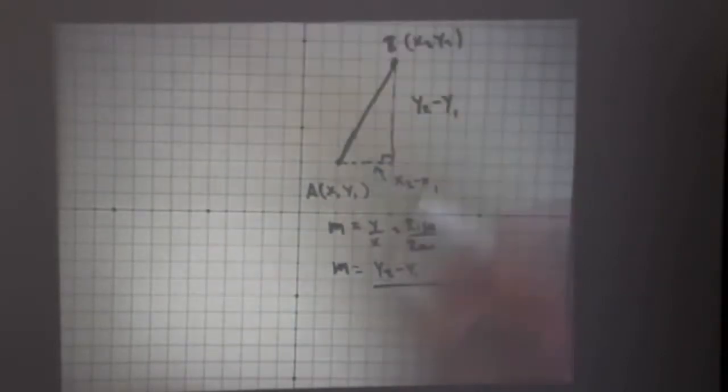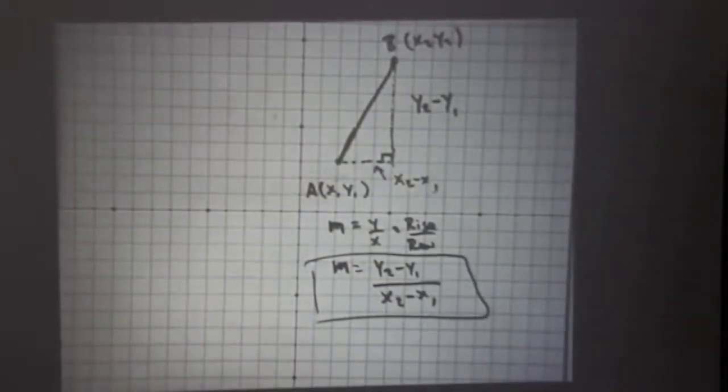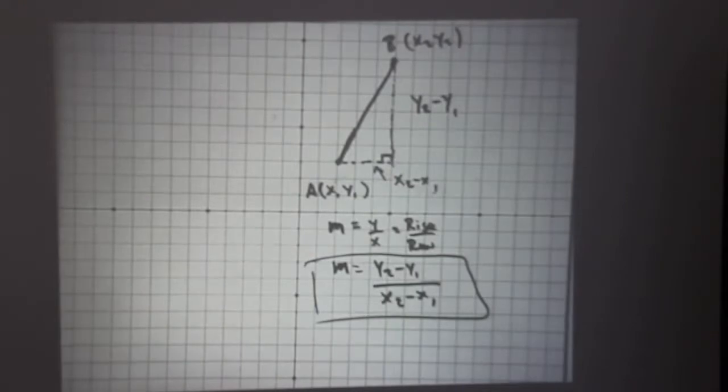And there it is in all its glory, the slope formula. y2 minus y1 over x2 minus x1. And it comes from this picture here.